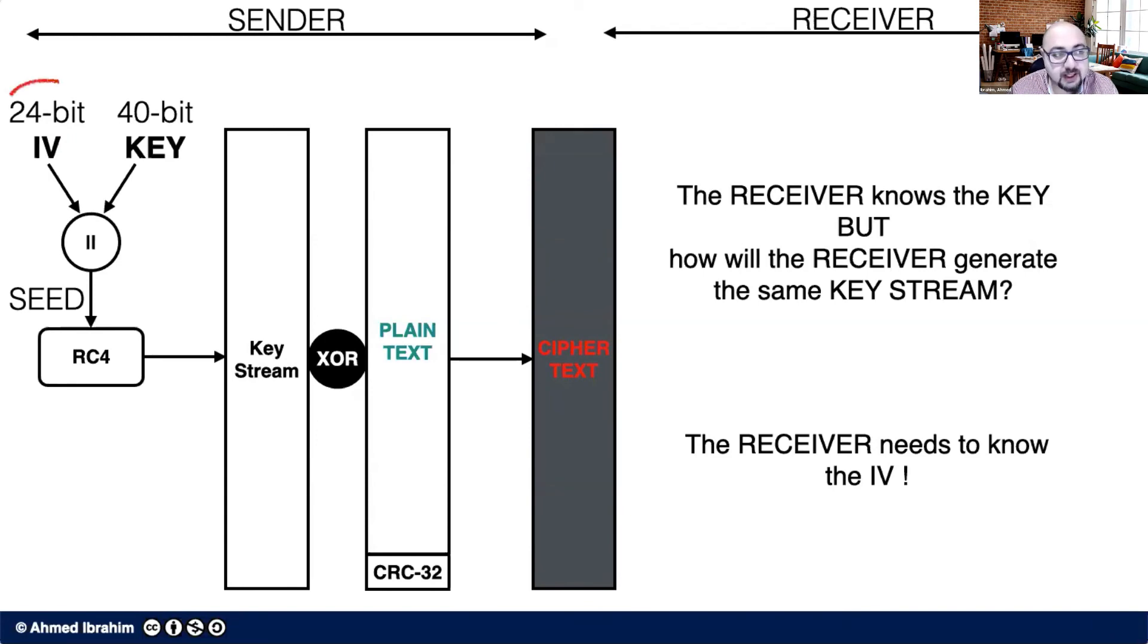So we need to send the initialization vector with the ciphertext to the receiver and the initialization vector gets sent in plain text.